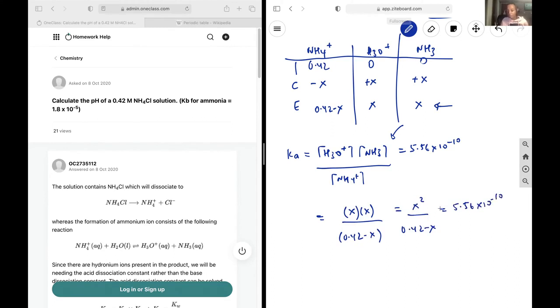So from this relation, we can tell that x is going to be pretty small, and we can verify that at the end. Which means that subtracting it from 0.42 isn't going to make that much of a difference in our calculation. And so we can actually forget about this and just write it as x squared over 0.42. That's going to be equal to 5.56 times 10 to the negative 10.